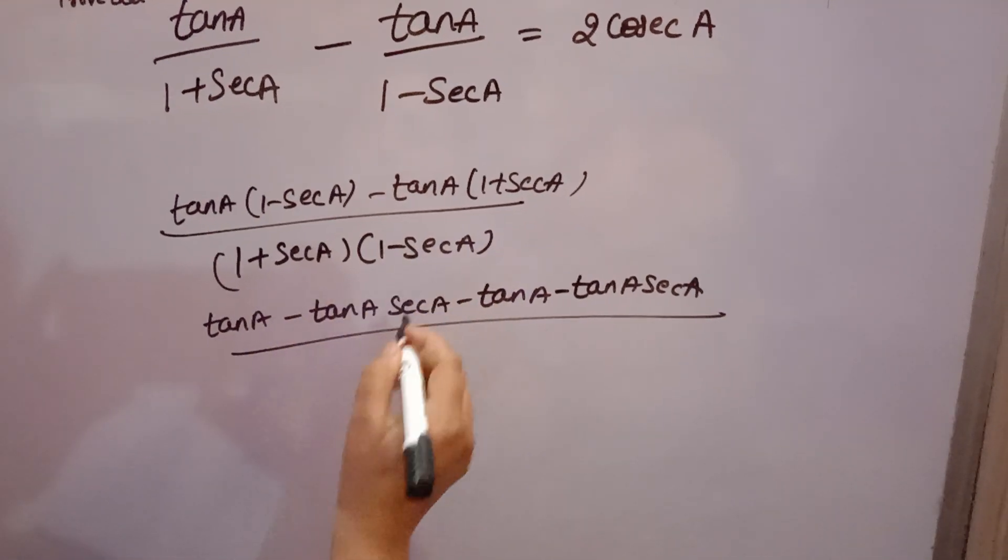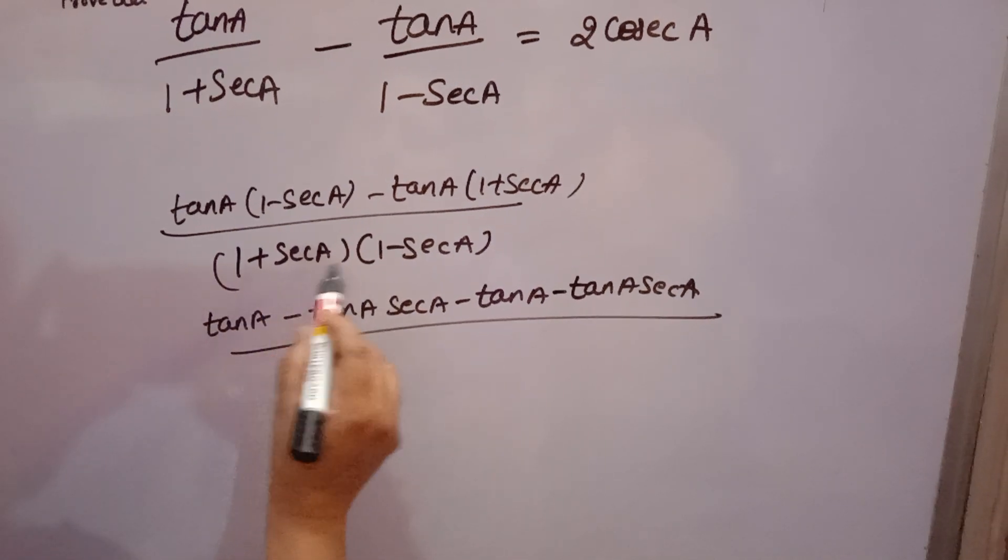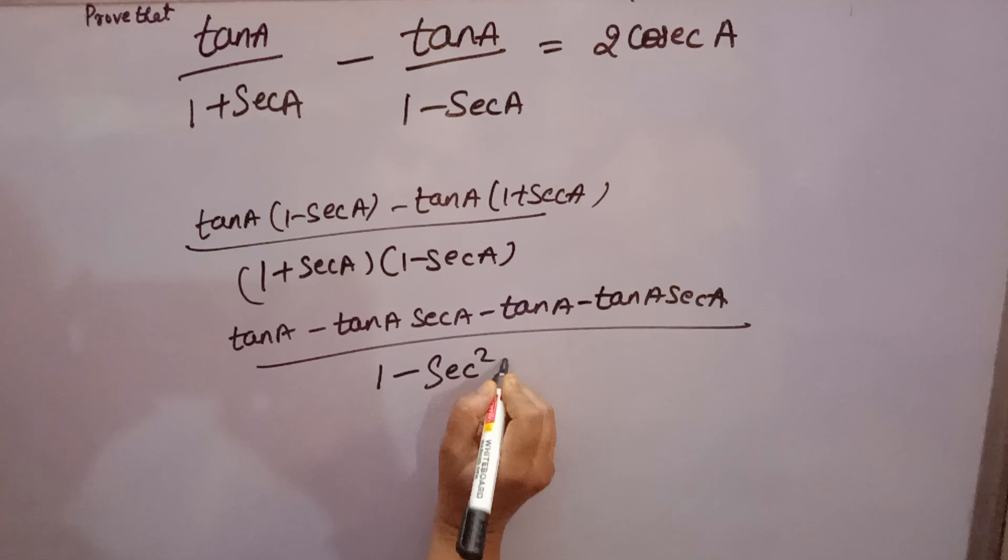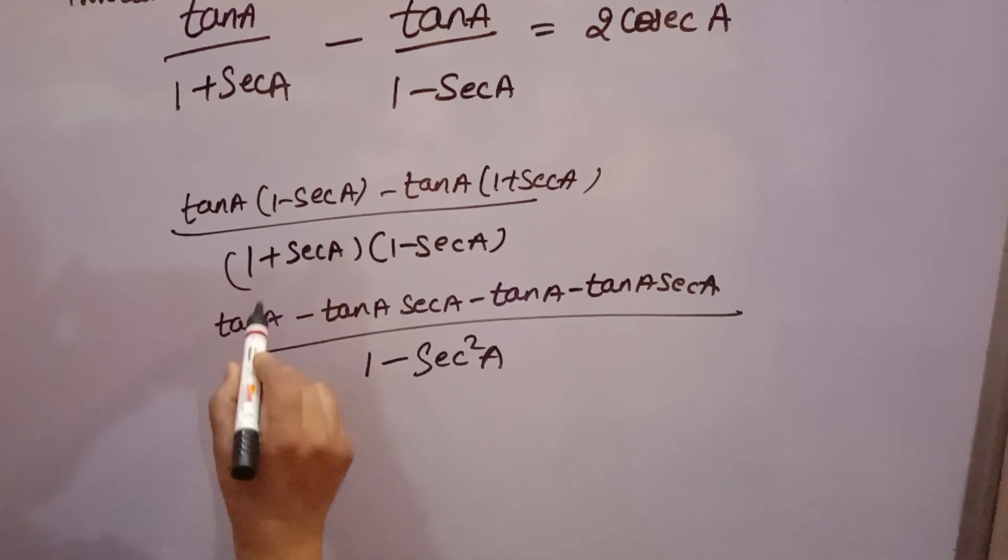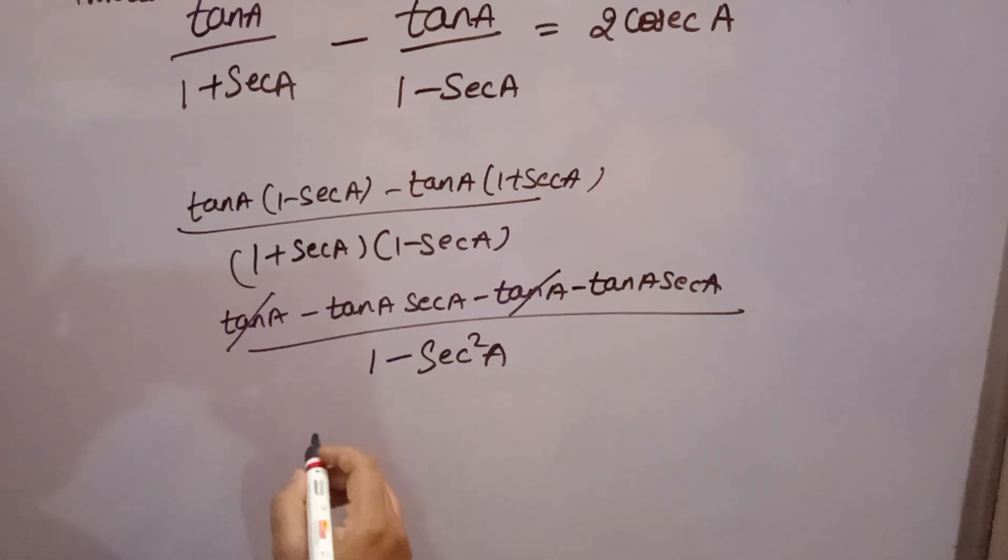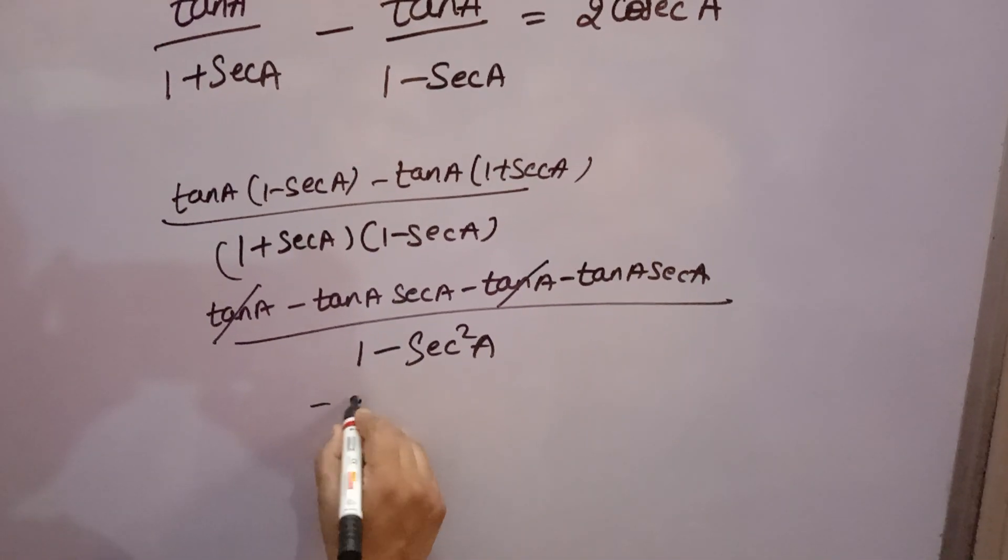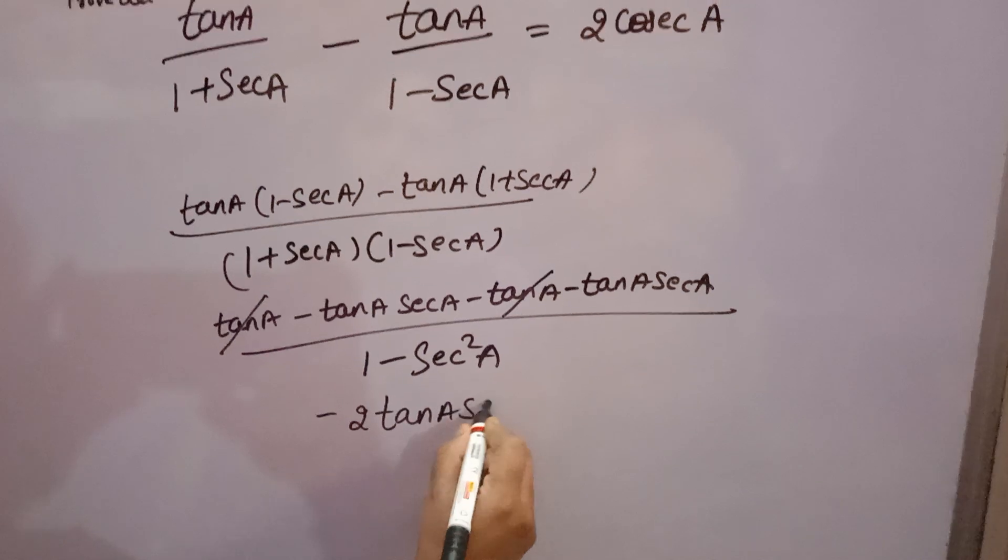And 1 plus sec A into 1 minus sec A. A plus B, A minus B gives A square minus B square. So 1 minus sec square A. Now tan A minus tan A cancel. Minus tan A sec A minus tan A sec A gives minus 2 tan A sec A.